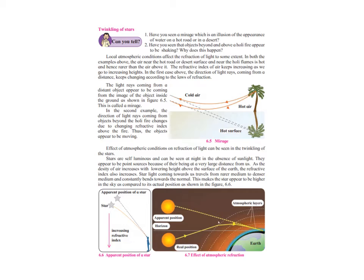The light rays coming from a distant object appear to be coming from the image of the object inside the ground. This is called a mirage. In the second example, the direction of light rays coming from objects beyond the holy fire changes due to changing refractive index above the fire. Thus, the object appears to be moving.